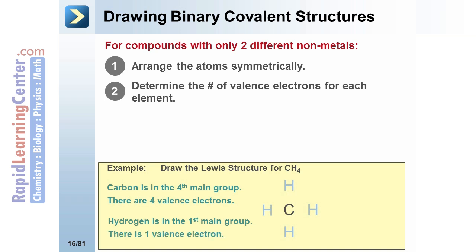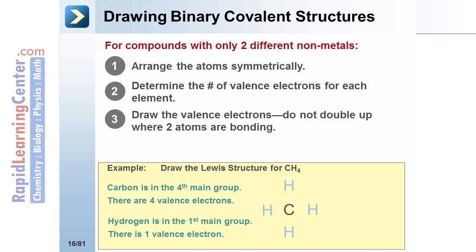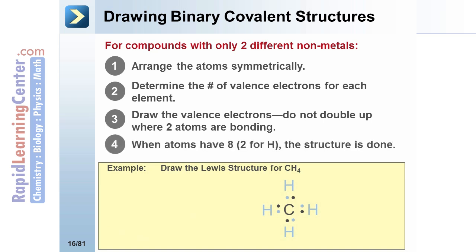Hydrogen is in the first group and has one electron. Draw the valence electrons. Do not double up on a side where the bond is going to be formed. When atoms have eight — or two for hydrogen — the structure is complete.